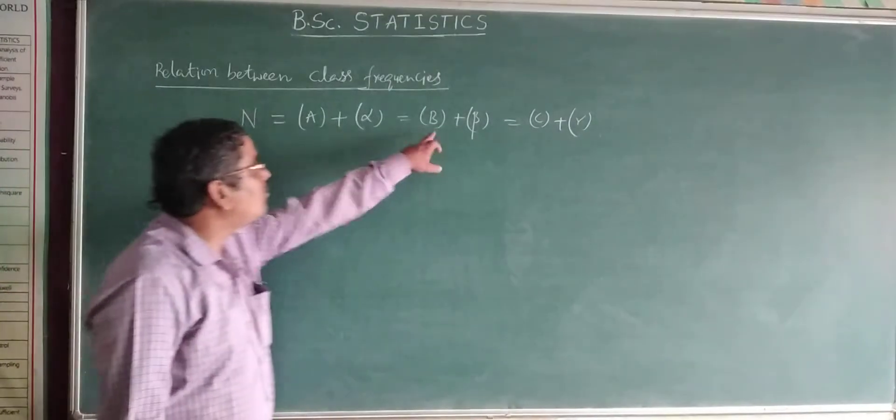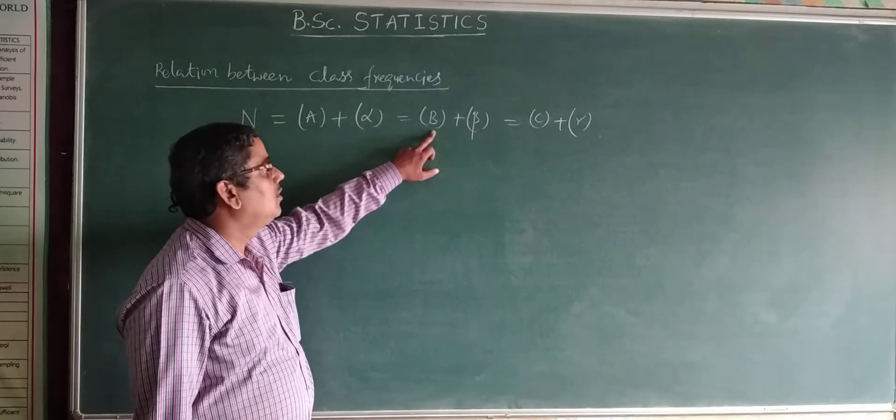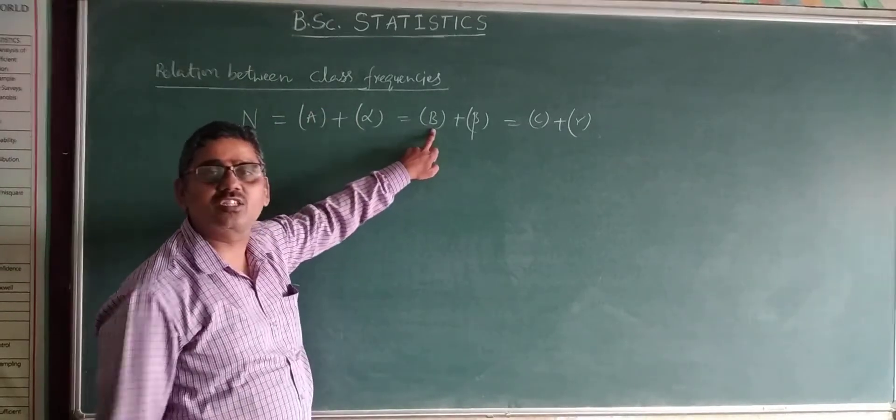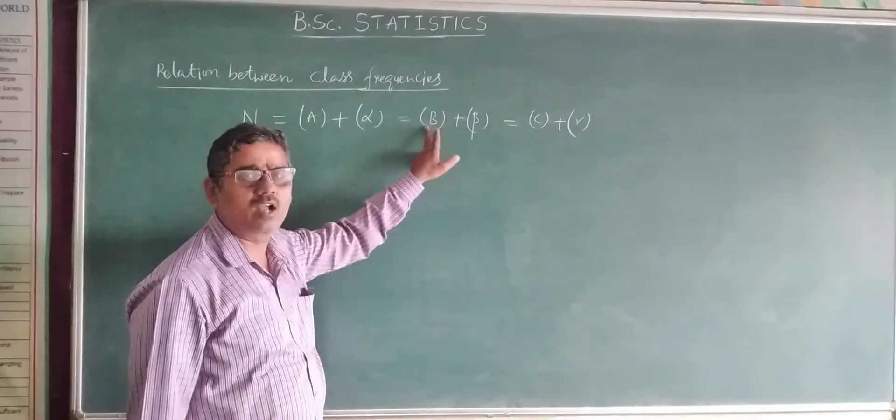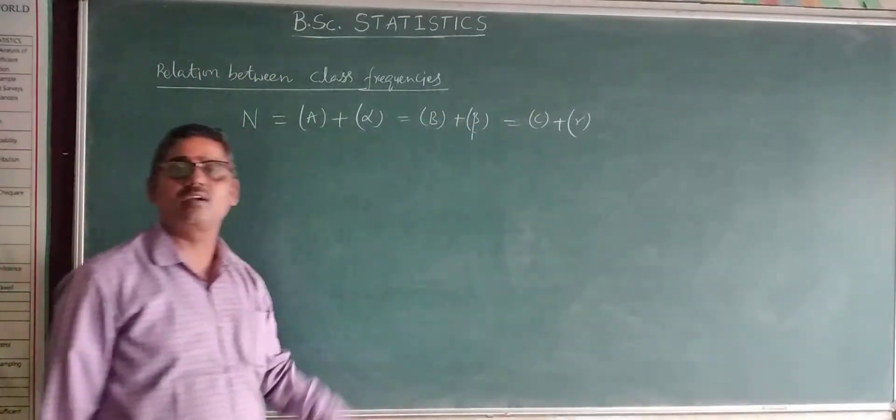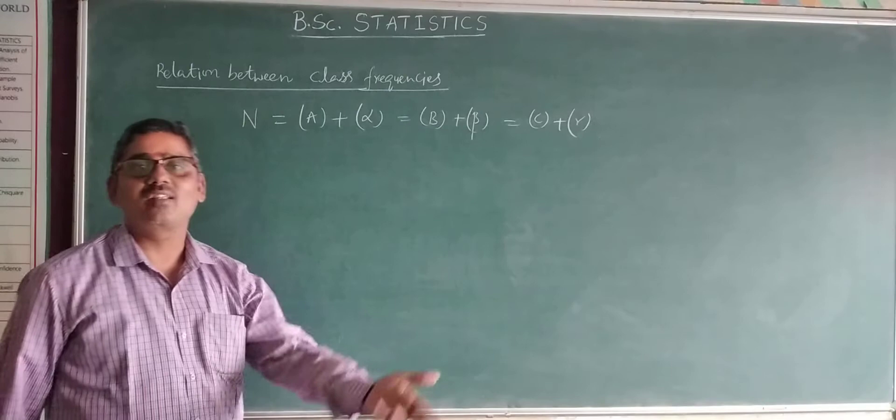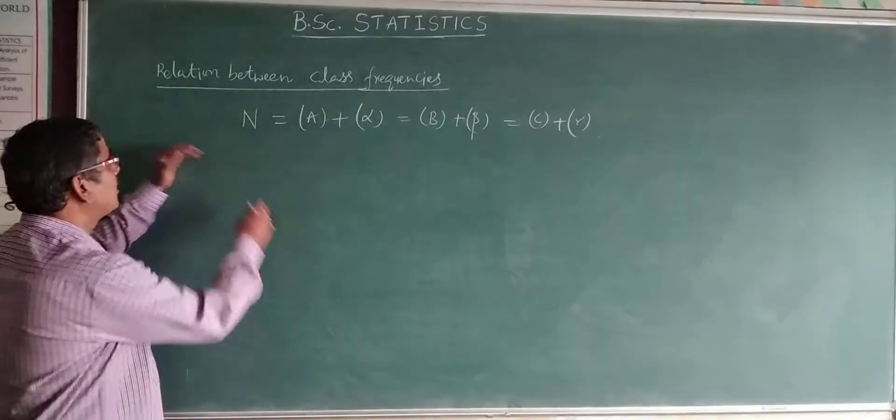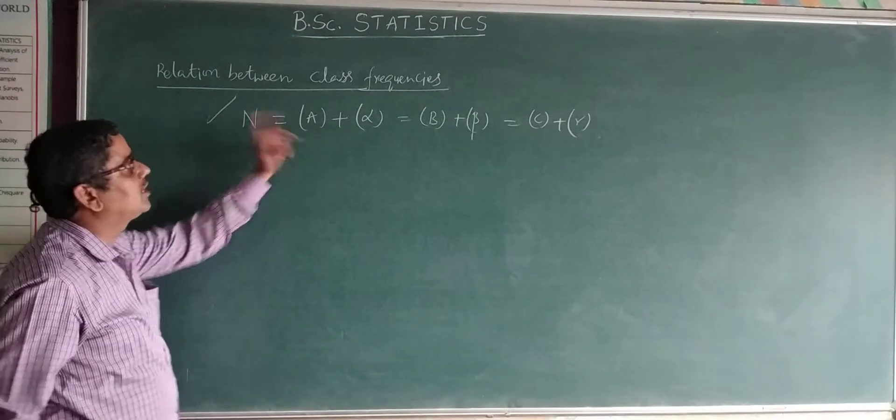For example, B is drinking. If there are 100 persons, among which drinkers are 20, remaining are 80. 20 plus 80 is 100, n equals 100. This is how zero order is expressed in the first order. Now I am going to take first order.